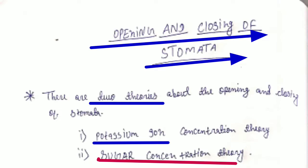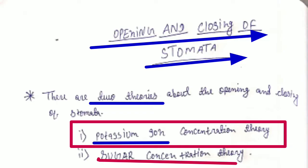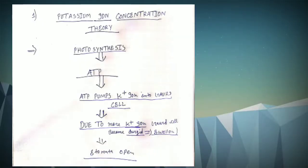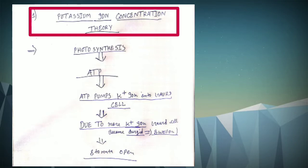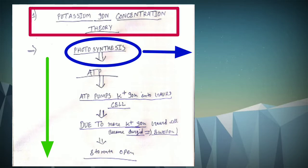In this video we will learn the first theory of opening and closing of stomata, that is potassium ion concentration theory. This theory says that during the daytime photosynthesis occurs in the availability of sunlight and chlorophyll and they produce ATP.